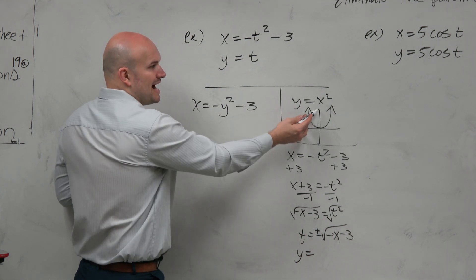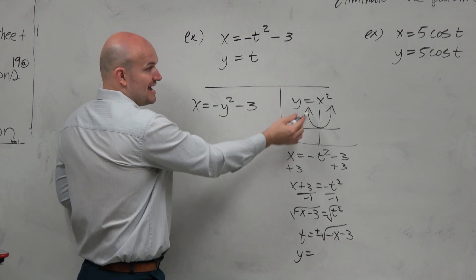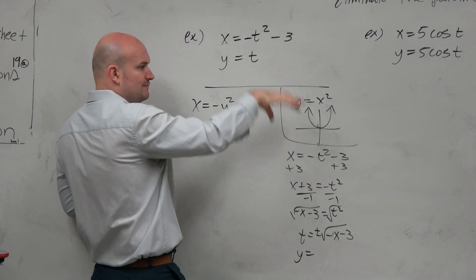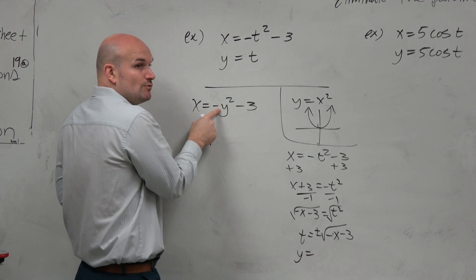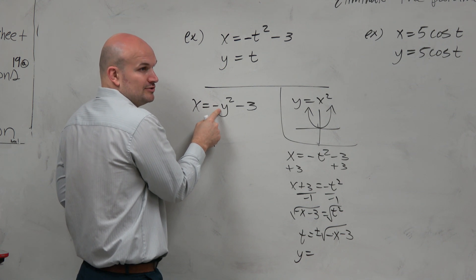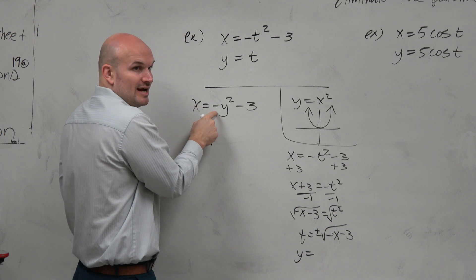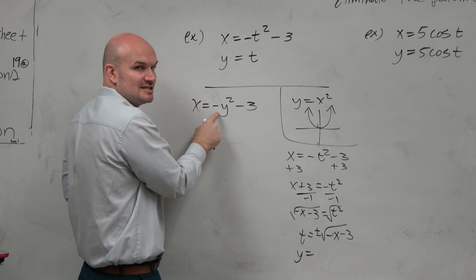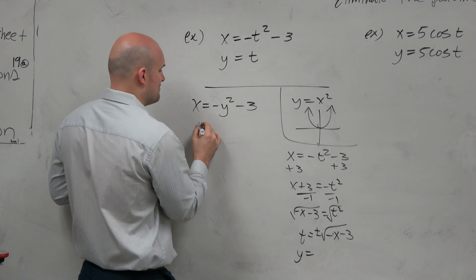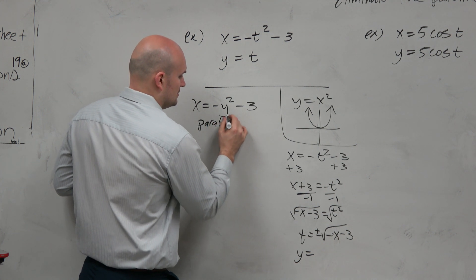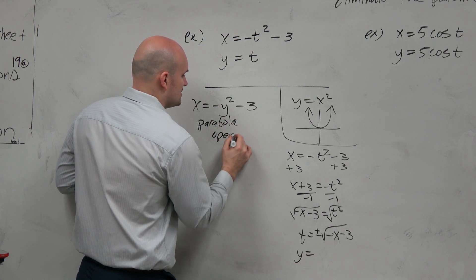However, when x² is positive you go up. When x² is negative you go down. If y² was positive, where do you think we should open up to - right or left? To the right. But we have a negative here. We have a reflection. So what's that going to do? To the left. So this is a parabola that opens left.